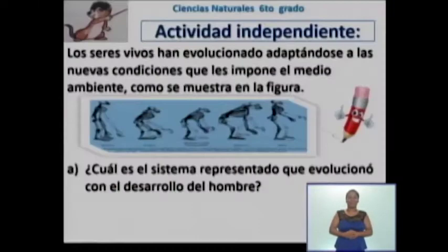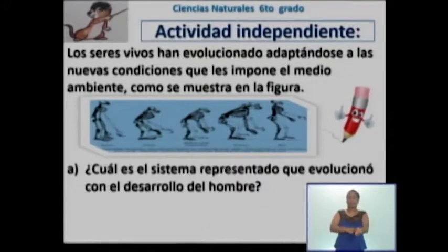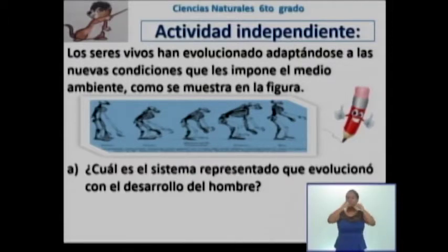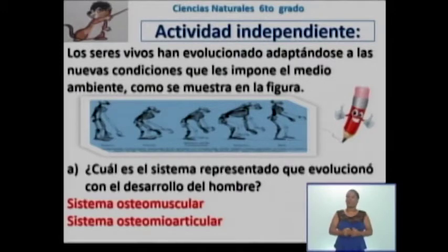¿Qué les parece si comenzamos revisando la actividad independiente que dejamos en el encuentro anterior? Los seres vivos han evolucionado adaptándose a las nuevas condiciones que le impone el medio ambiente, como se muestra en la figura. En el inciso A, ¿cuál es el sistema representado que evolucionó con el desarrollo del hombre? Estoy seguro que en su mayoría respondieron que el sistema representado es el sistema osteomuscular o sistema osteomioarticular.